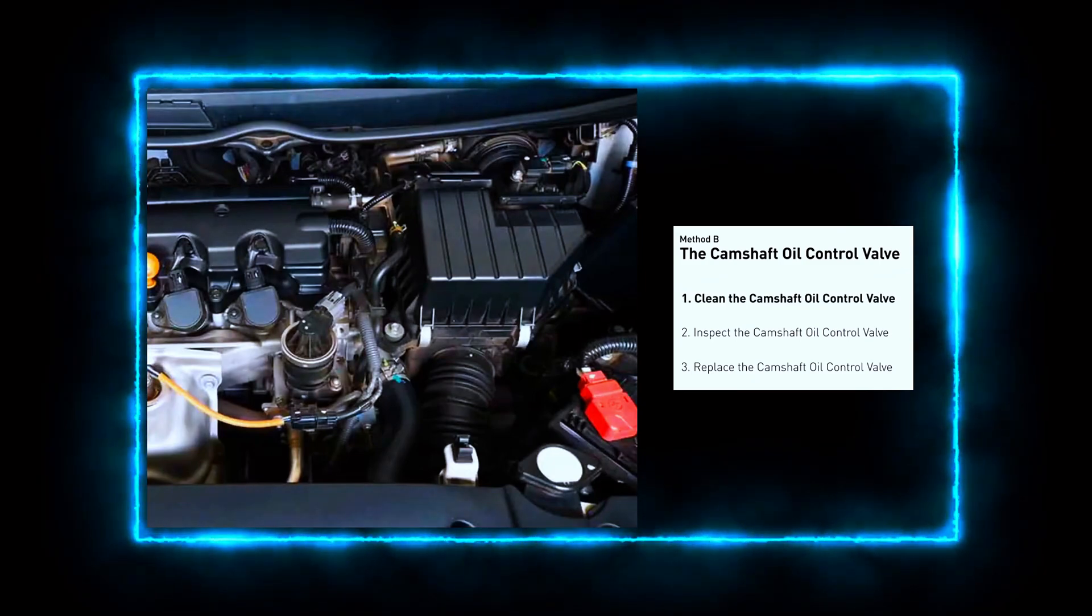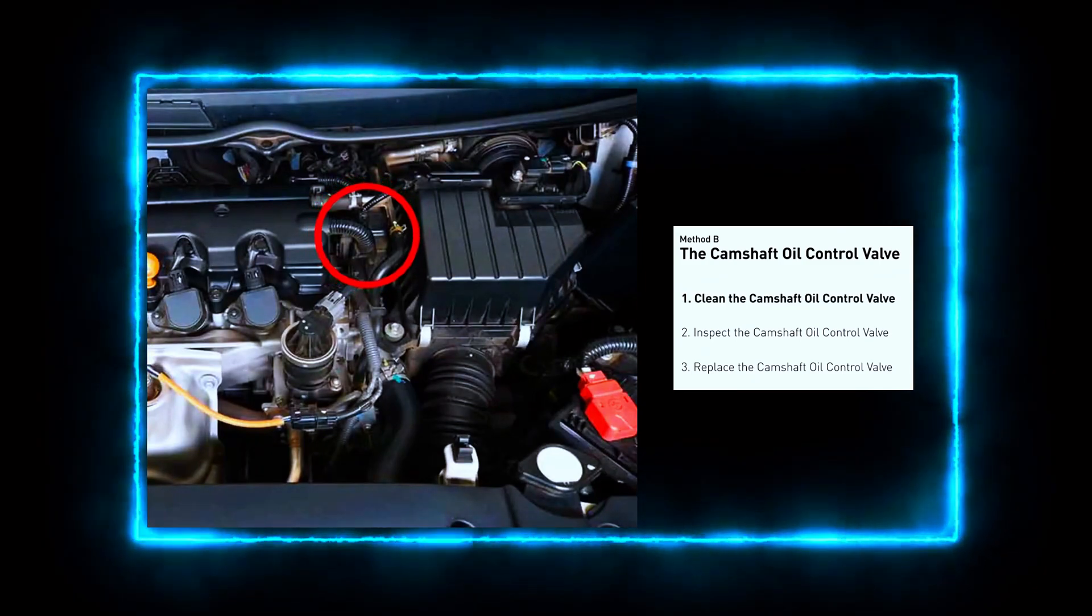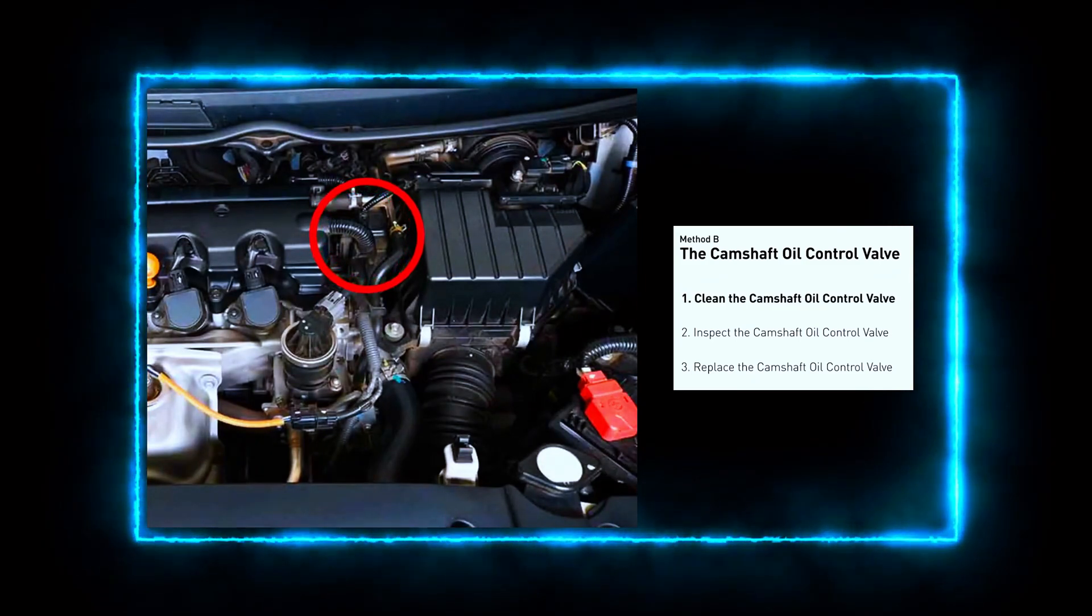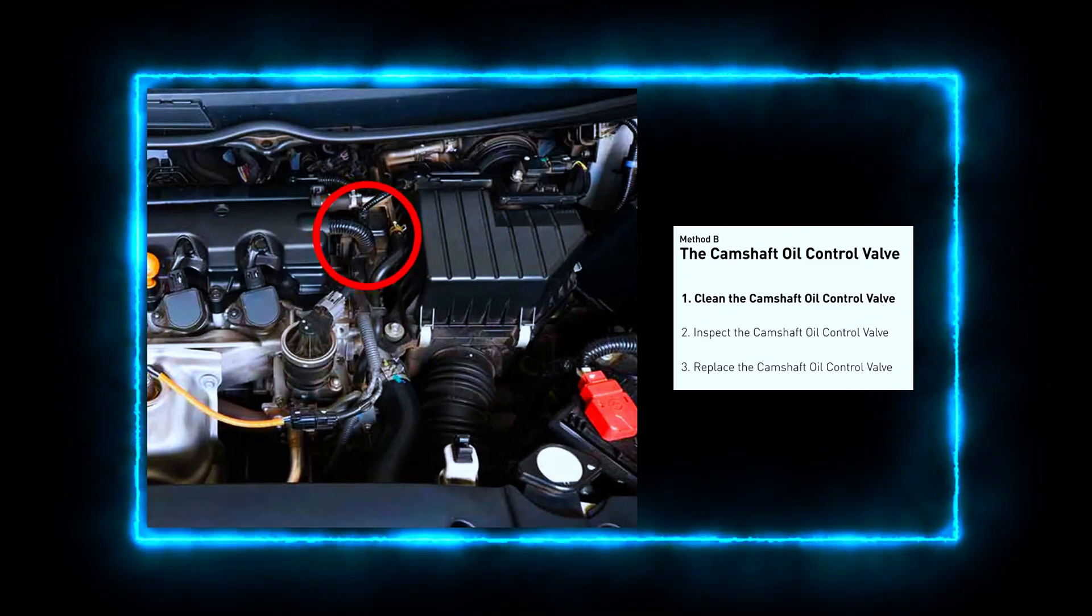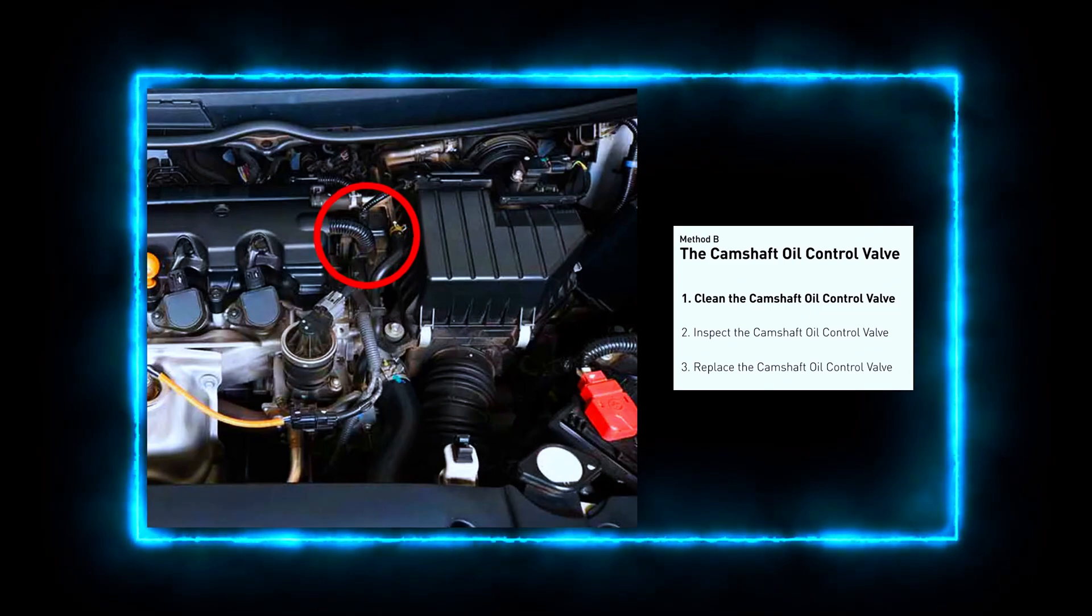Locate the camshaft oil control valve. Depending on your vehicle, it's usually mounted on the cylinder head near the camshaft. You'll typically find it bolted to the engine block with an electrical connector attached.